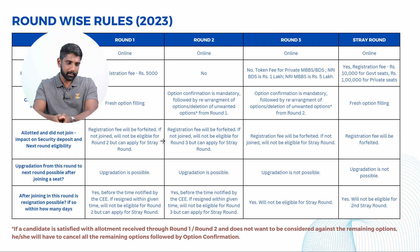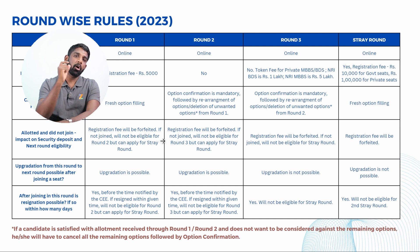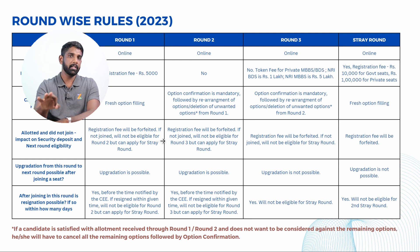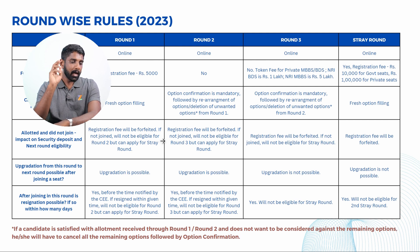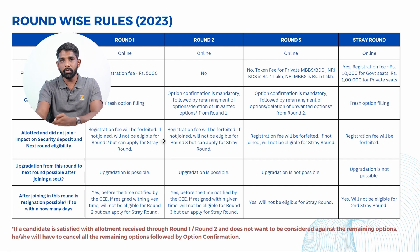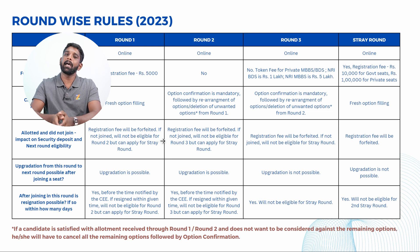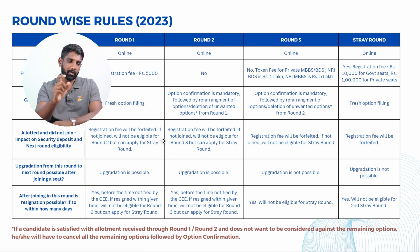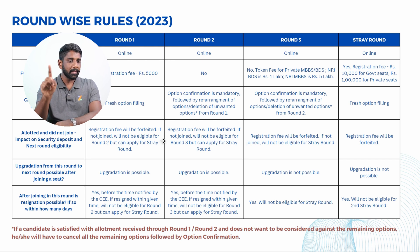If you don't join the seat in Round Three, the registration fee will be forfeited. Unlike Round One and Round Two, if you don't join the allotted seat in Round Three you will not be eligible for the Stray Round. Upgradation is not possible from Round Three to Stray Round. If a candidate joins the seat and then resigns, they will also not be eligible for the Stray Round. In Round Three, whether you don't join or you join and resign, you become ineligible for the Stray Round — please make a note of this.